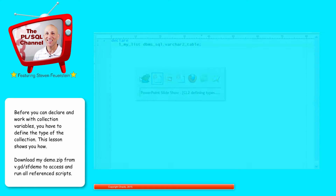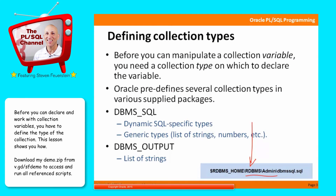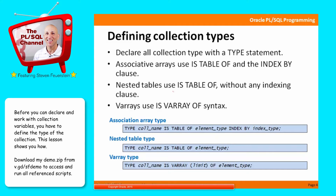Most of the time you're not going to be using a predefined type — you'll be using your own types. But those predefined ones are available if you just want a quick default for lists of strings, numbers, and so on. You're mostly going to declare your own collection type specific to your application. There are three different types of collections: associative arrays, nested tables, and varrays.